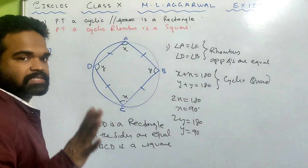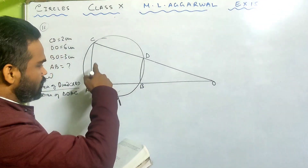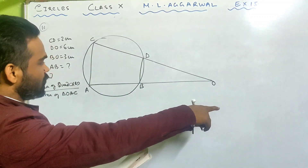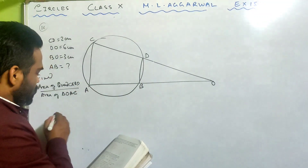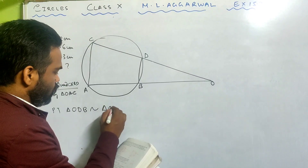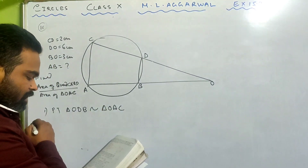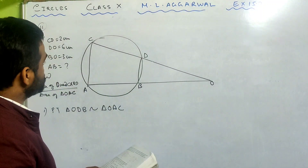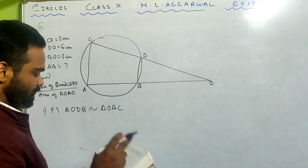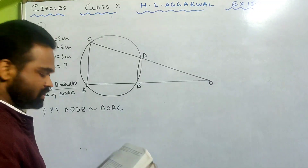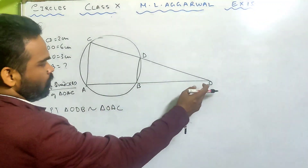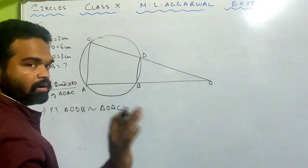So we'll do sum number 16 now. In the adjoining figure, chords AB and CD of the circle are produced to meet at O. Prove that triangle ODB is similar to triangle OAC. Then, given that CD is 2 cm, DO is 6 cm, BO is 3 cm, find AB. Also find the area of quadrilateral CABD and the area of triangle OAC. First of all, we need to prove that triangle OBD and triangle OAC are similar.